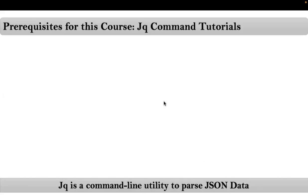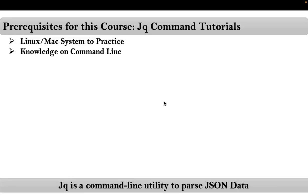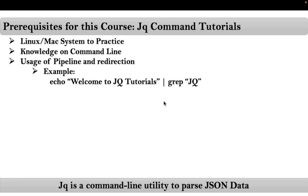First let me go through the prerequisites for this course. You should have some Linux or Mac system to practice, and basic knowledge on the command line — how to execute commands, and the basic usage of pipeline and redirection. For example, here the echo output we are pipelining to grep command, and this same concept you can also write using the redirection symbol. So for this course you should have basic knowledge on how to use pipelines and redirections.